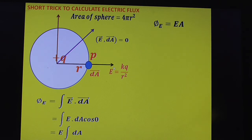Now substitute value of E. What is E? KQ by r square. And what is A? That is area 4 pi r square. Substitute E and A here. So this gives KQ by r square and A value 4 pi r square.